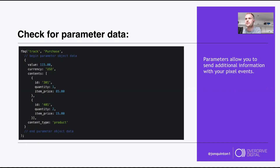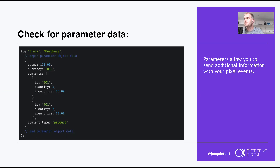To check pixel implementation: get the Facebook Pixel Helper extension in Chrome — it'll tell you what's firing. If you've implemented via Google Tag Manager, use preview mode to see what's firing where and when. The combination of those two things gives you a full answer on whether the implementation is correct and where to look to fix it.